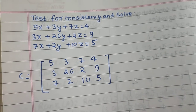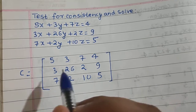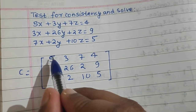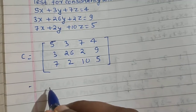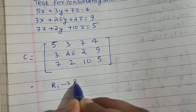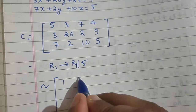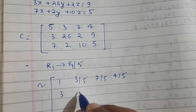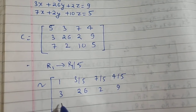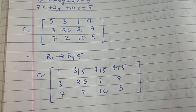The only issue is we need to convert this to echelon form. In this particular problem we don't have a 1 here, so we will have to create one. We can write R1 → R1 divided by 5, so this will convert to 1, 3/5, 7/5, and 4/5. The benefit is we are getting a 1 here.